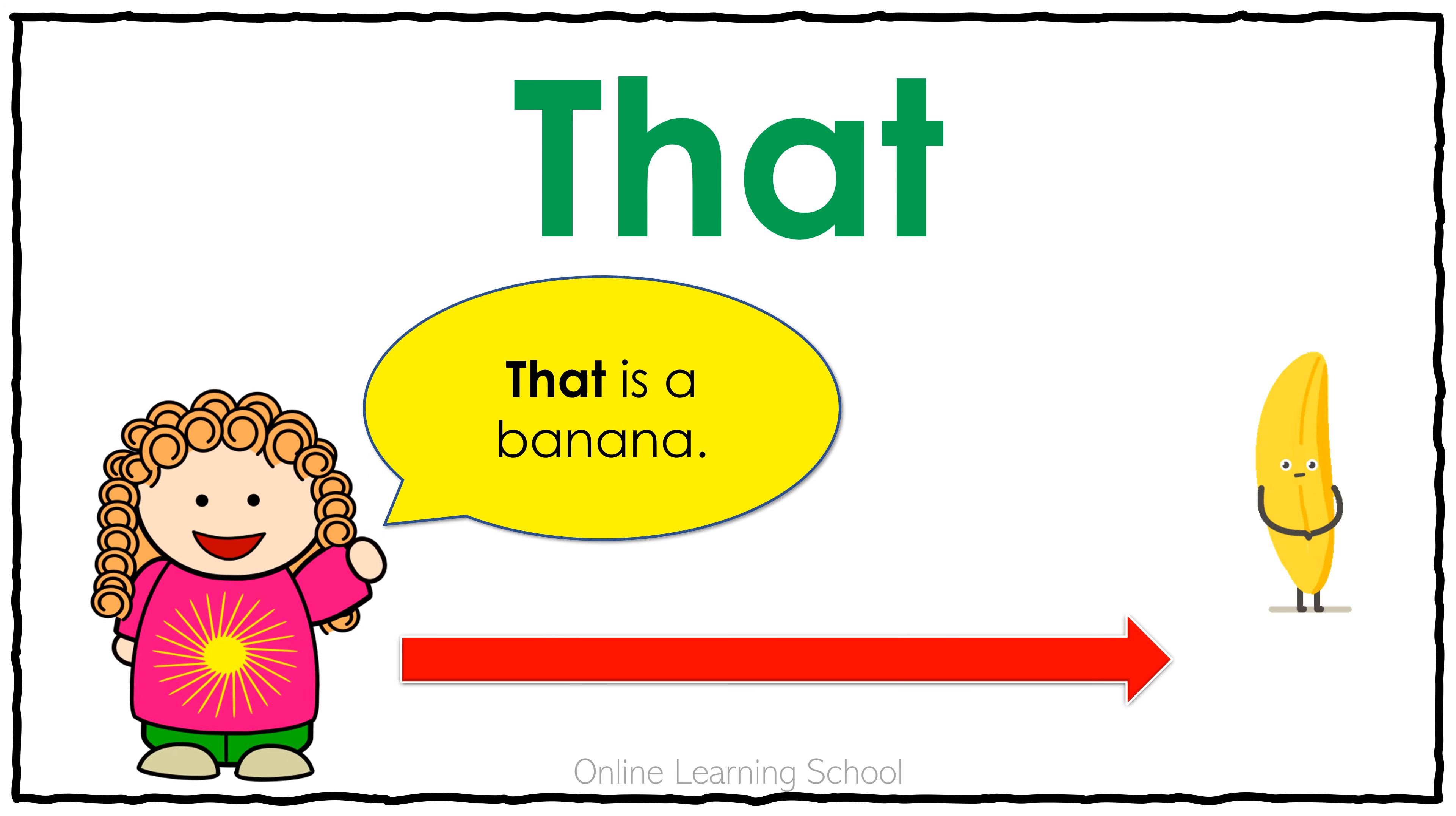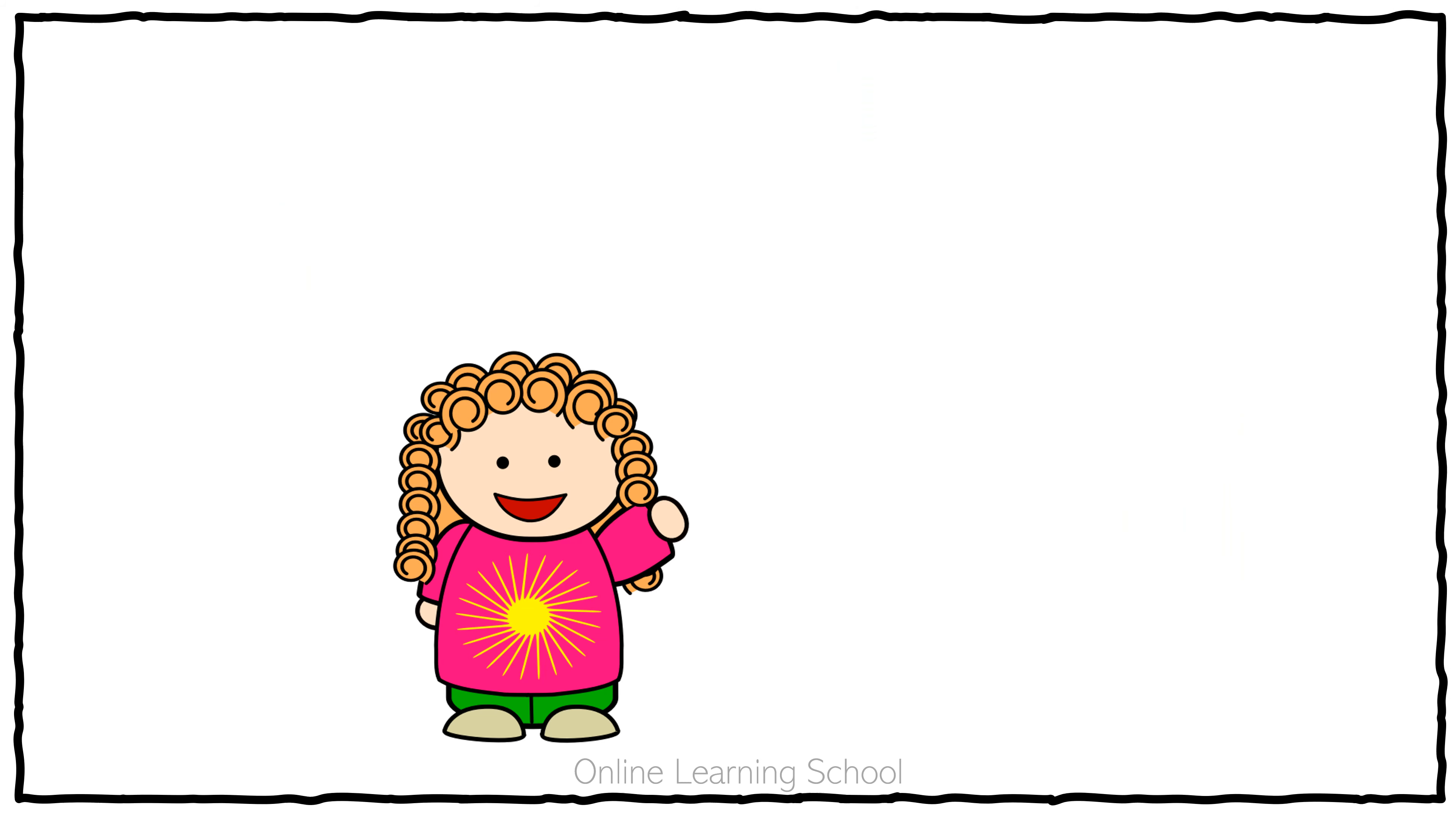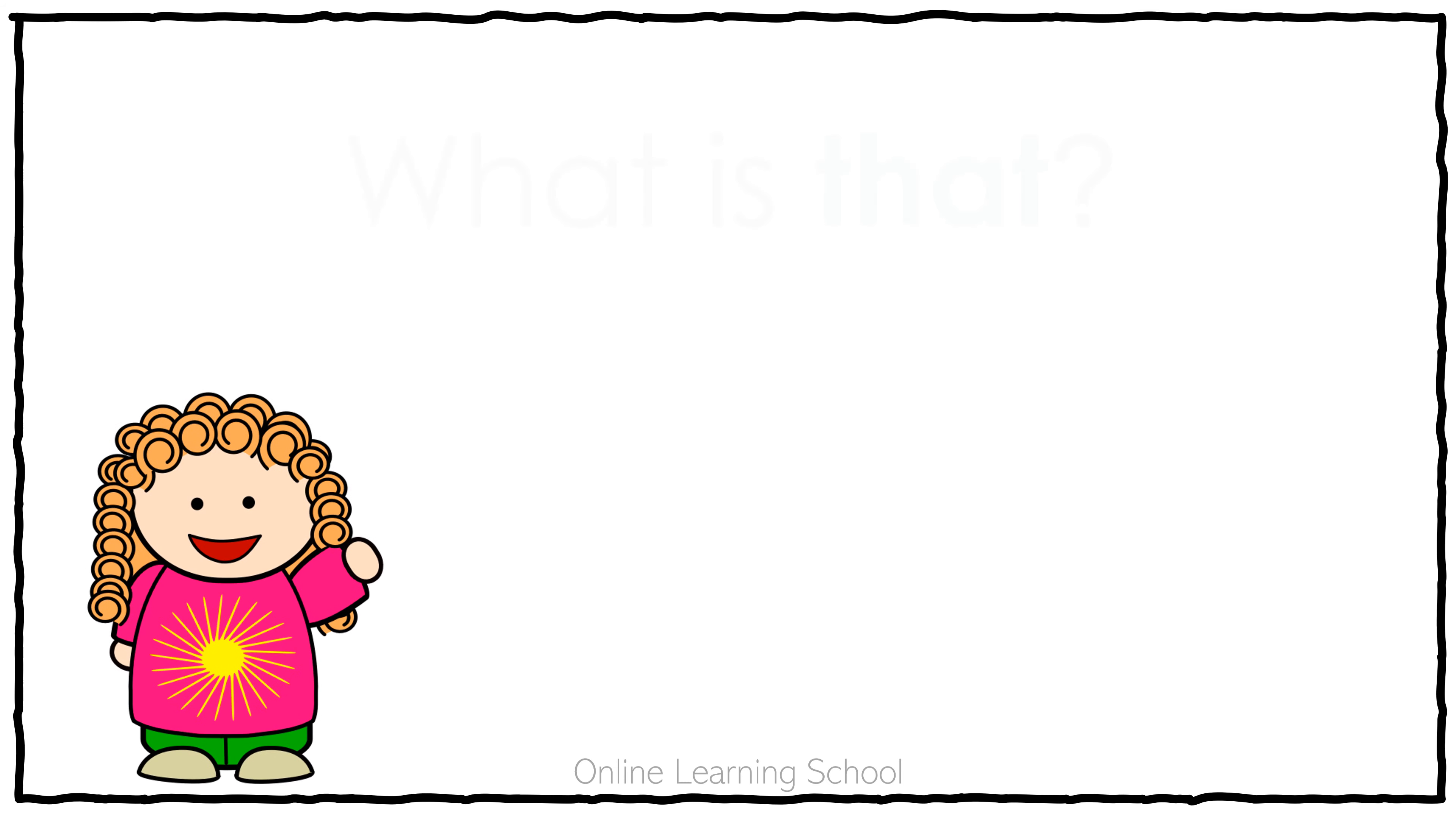Now let's read. What is this? This is a cat. What is that? That is a butterfly. What is this? This is a chair. What is that? That is a table. What is this? This is a pencil. What is that?